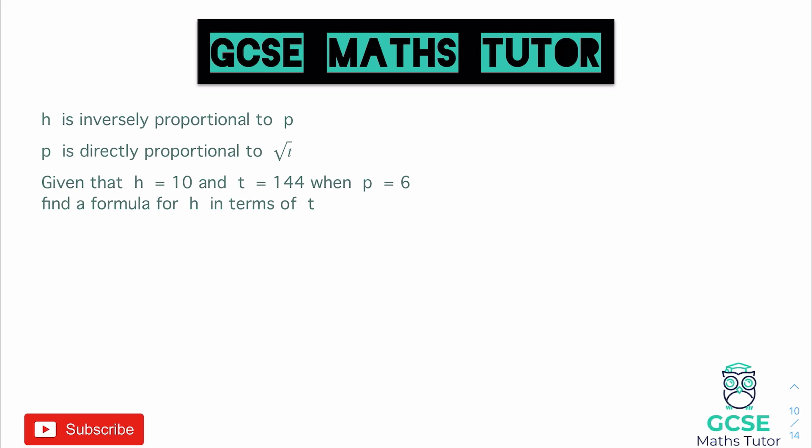So it says h is inversely proportional to p and p is directly proportional to the square root of t. And then it tells us some values. It says given that h is 10, t is 144, when p is 6, find a formula for h in terms of t.